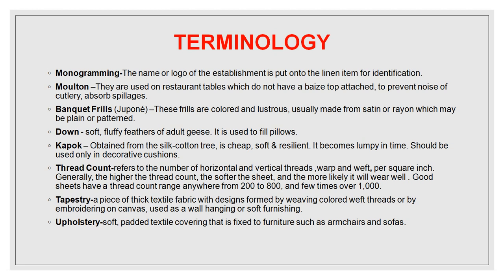Banquet frills, also called juponi, are colored and lustrous frills made from satin or rayon, which may be plain or patterned. Down refers to the soft, fluffy feathers of adult geese, used to fill pillows. Kapok is also used for filling pillows; it is obtained from the silk cotton tree and is cheap, soft, and resilient.